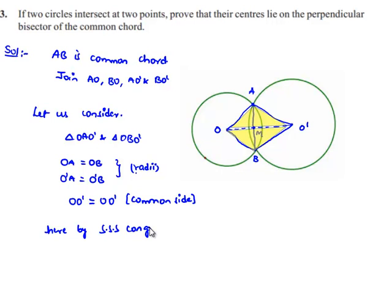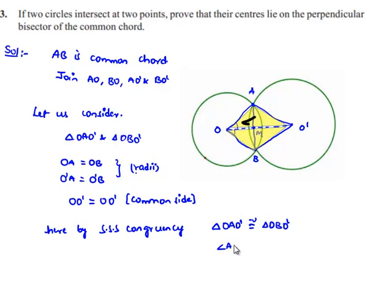Since OA = OB, O'A = O'B, and OO' is the common side, we can say both triangles are congruent: triangle OAO' is congruent to triangle OBO'. Therefore, angle AOO' is equal to angle BOO'.